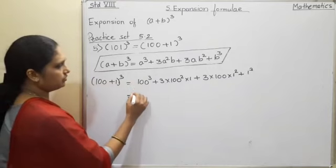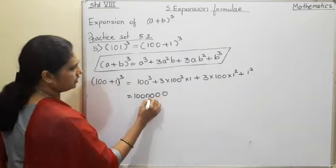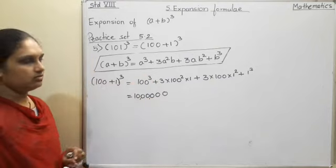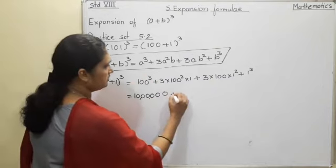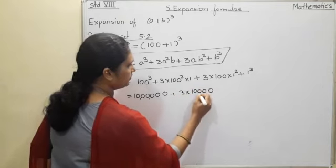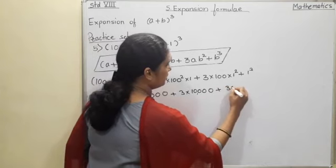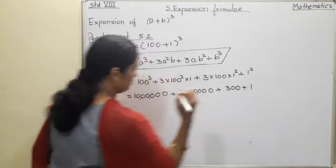Now, 100³. What is 100³? This is 10 lakh plus 3 into 100 square. How much? 10,000 plus 300 plus 1.